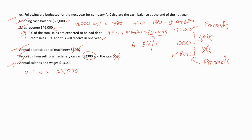So $20,079 will be the cash amount the company will receive in the next year. The 55% will be received in the year after the next year. Remember that we are calculating the cash budget for the next year, not for the year after. So the sales revenue recognized is equal to $20,079 — this is a cash inflow, so this is a positive value.